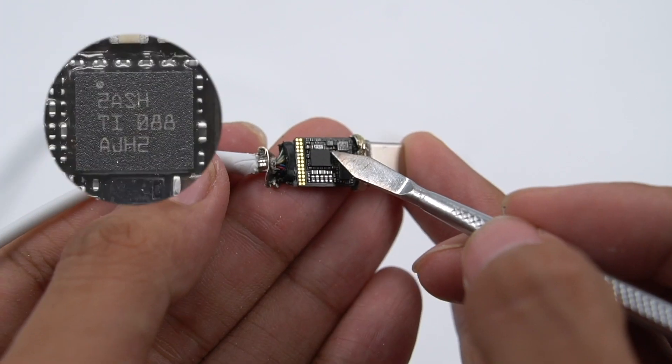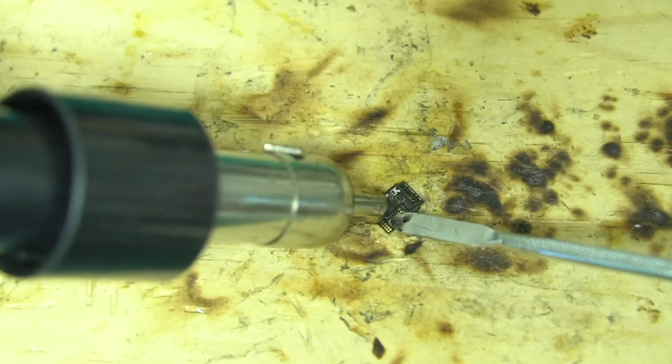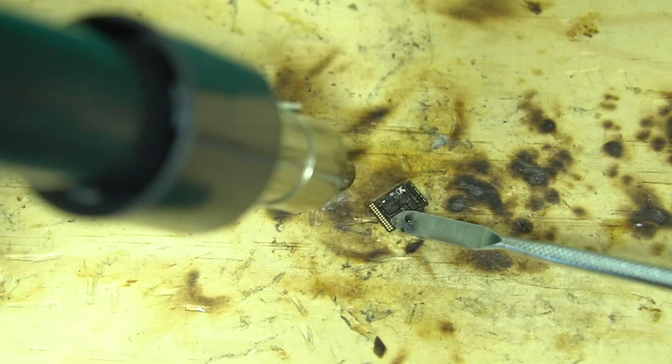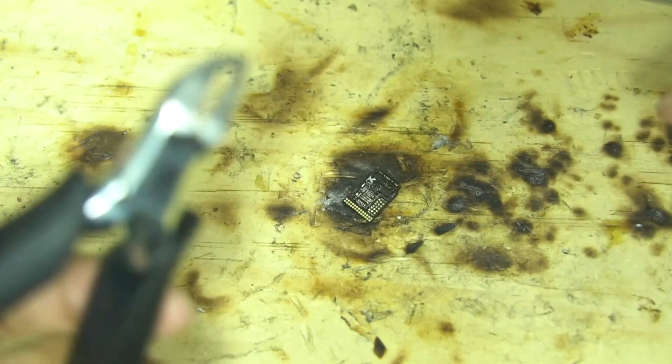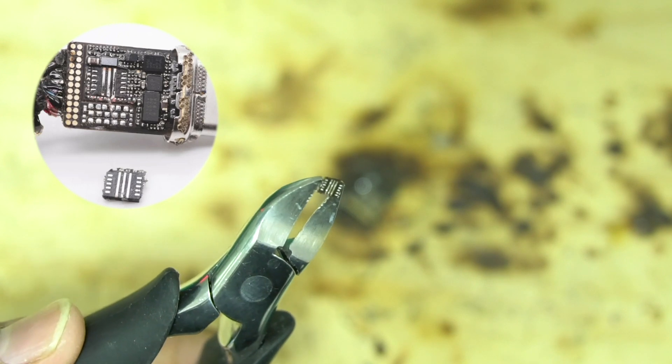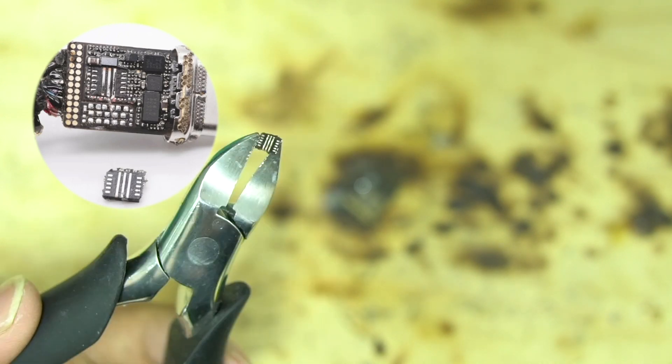This big chip comes from Texas Instruments. Remove it with heat gun. We found it's the boost converter used to boost the input voltage and power the charger. Model is TPS61178.